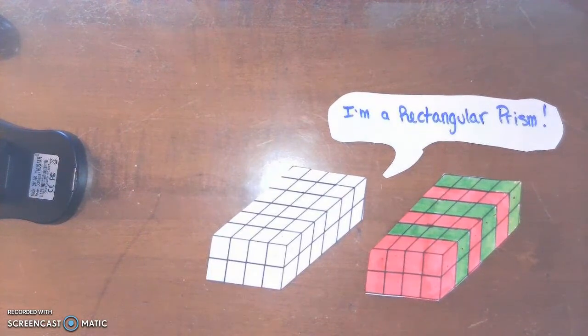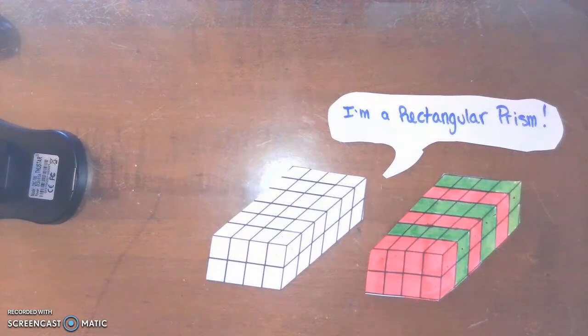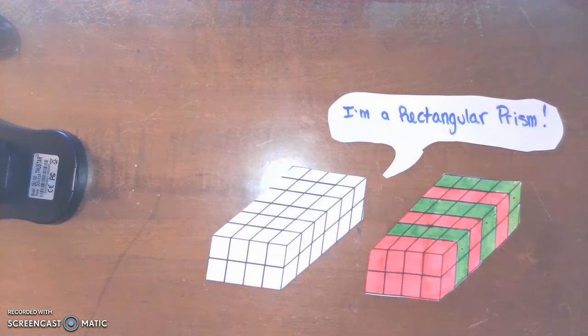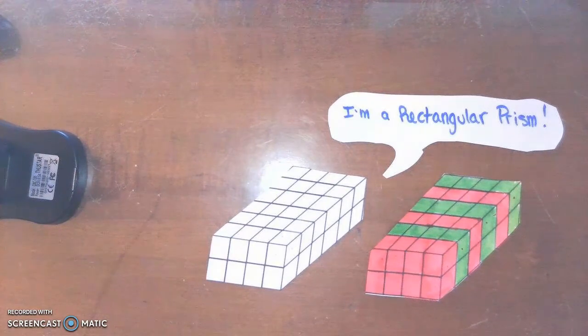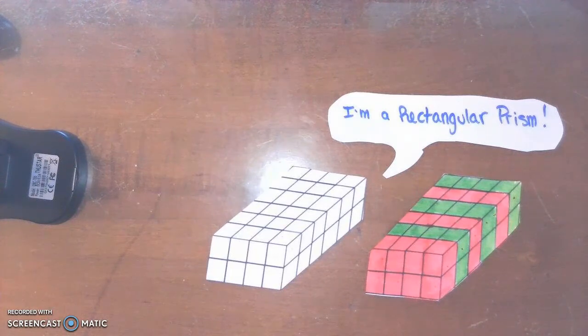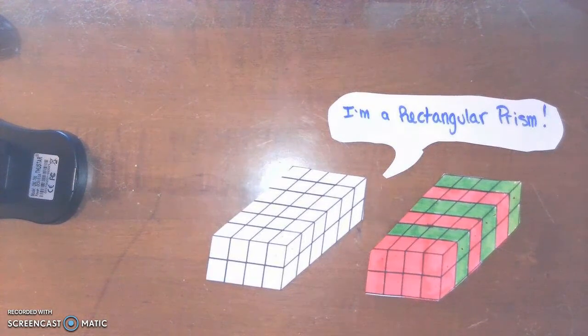I hope this helps being able to look at two-dimensional representations of rectangular prisms and coloring them in different ways to show the layers that are present. This work will lead us to a more formal formula of volume that will often make use of using layers and multiplying by the number of layers in order to find the total volume. I hope this video is helpful and thank you for watching.